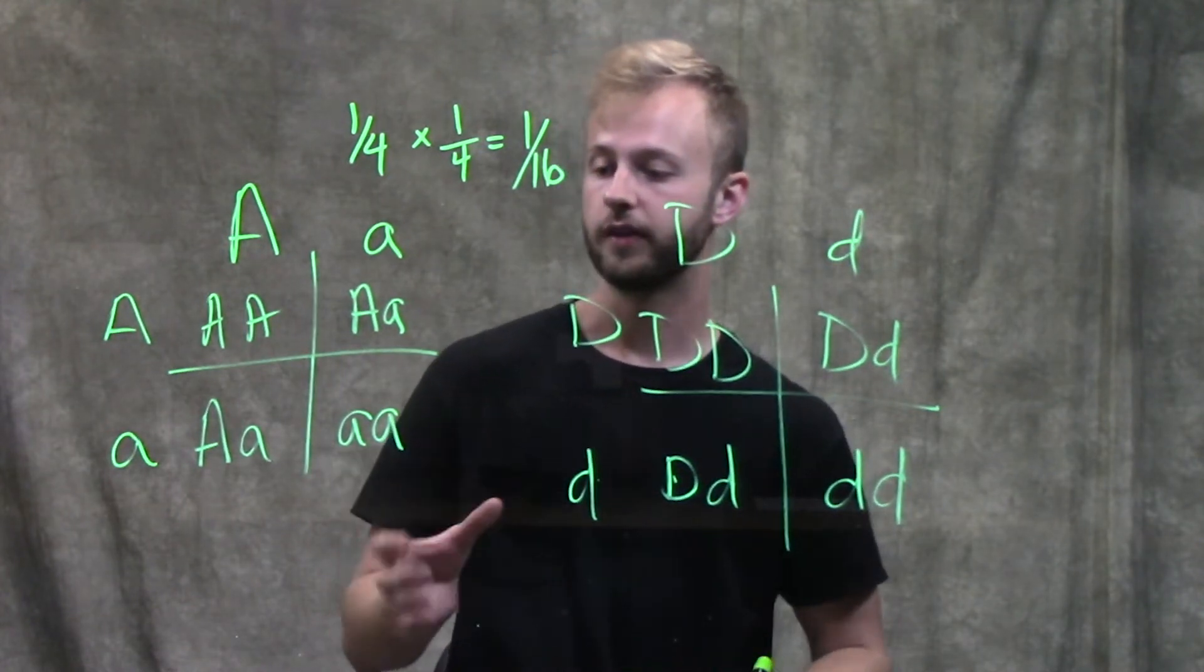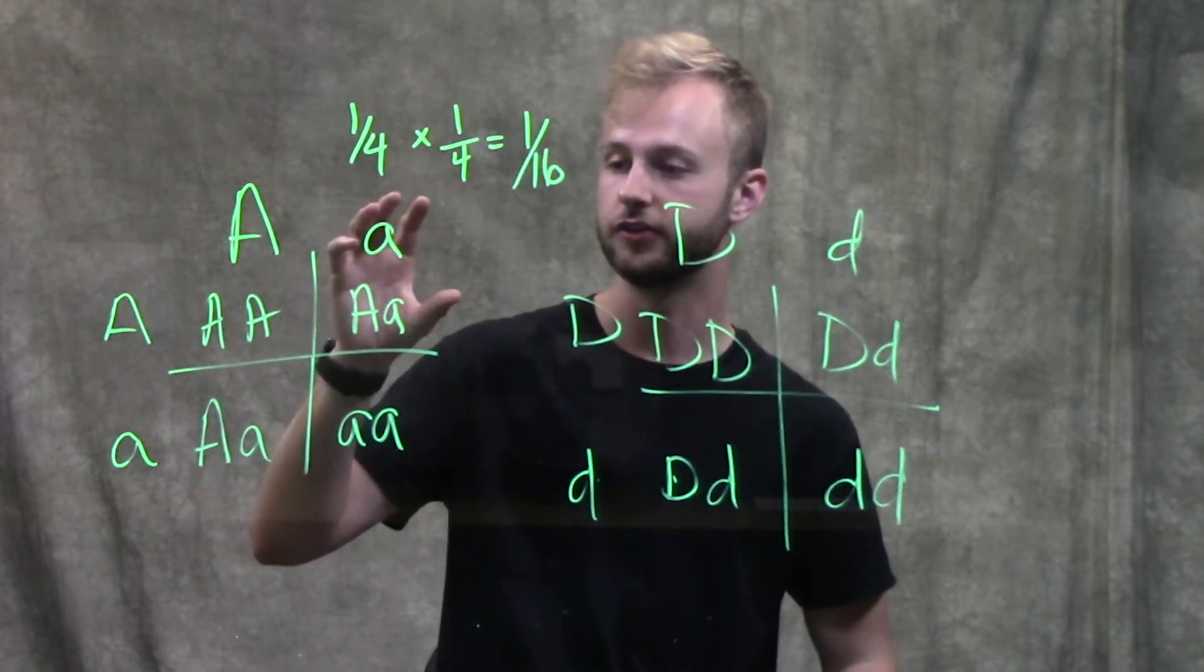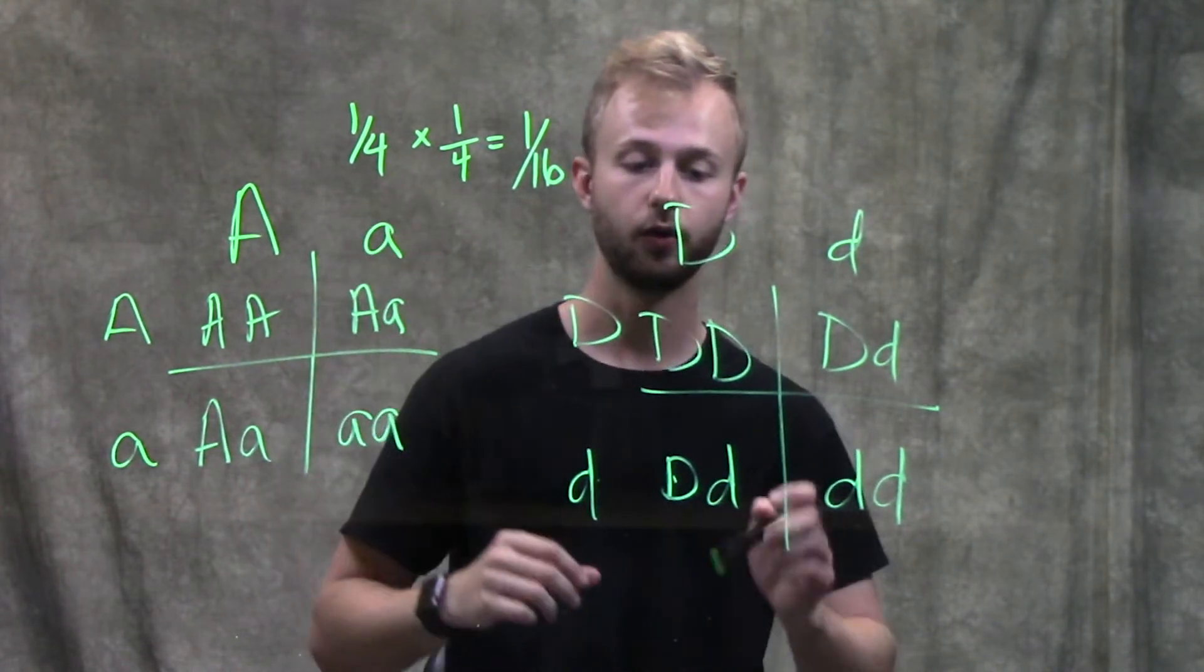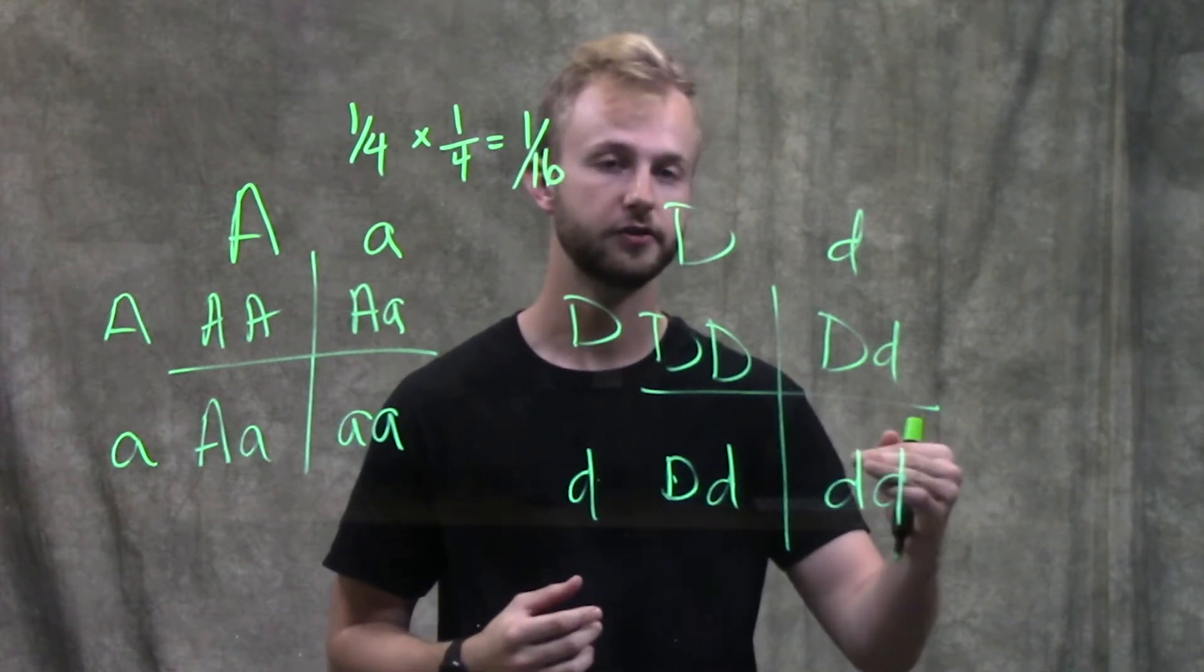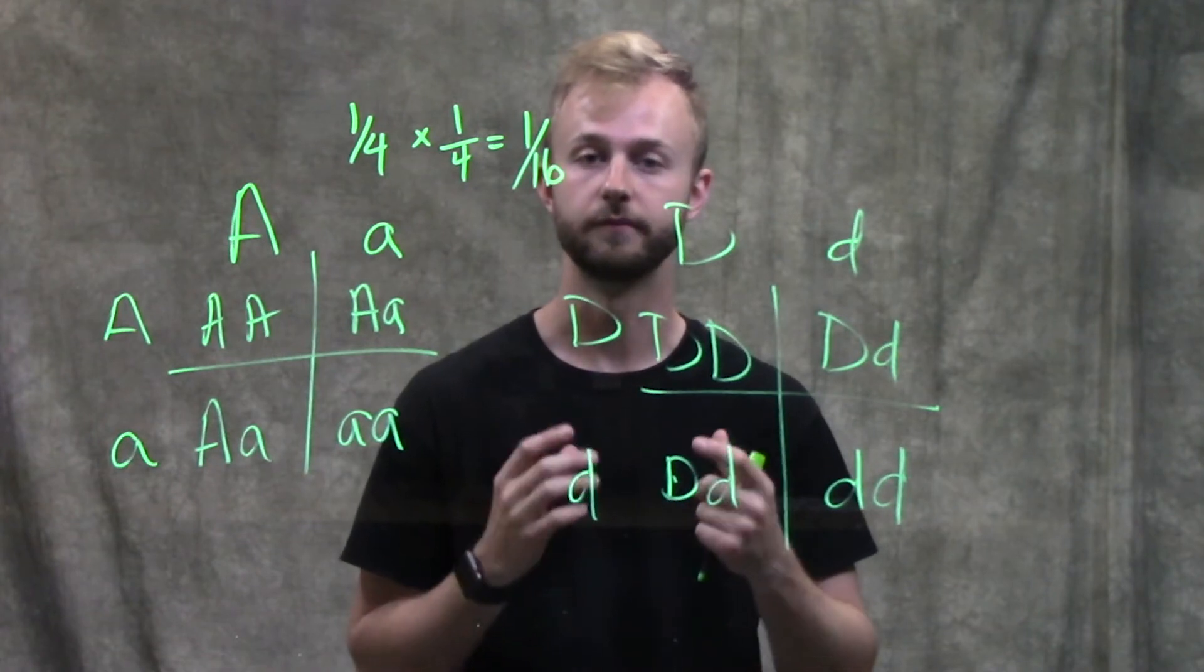If we want to know the probability that an individual will have the genotype big A, little a or the genotype little d, little d, for example, then we add the probabilities of those two events together.